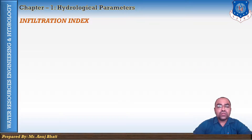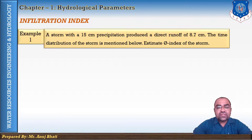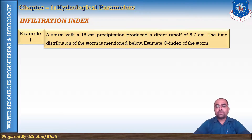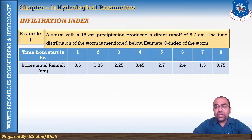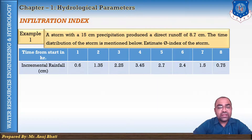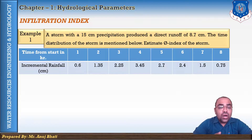The first example is on the infiltration index. A storm with 15 centimeter precipitation produced a direct runoff of 8.7 centimeter. The time distribution of the storm is given, and with this data we have to estimate the phi index for this storm. We are given time from the start in hours and the incremental rainfall — note that this is an increment, not a rate.